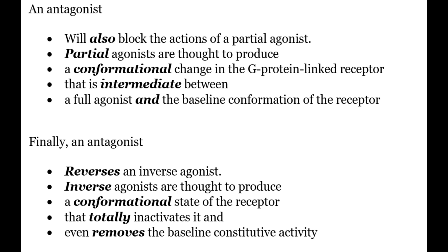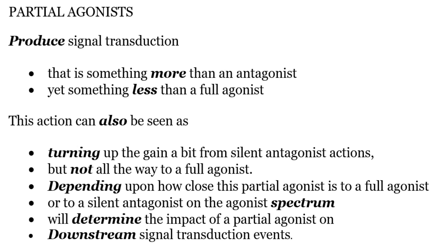An antagonist will also block the action of a partial agonist. Partial agonists are thought to produce a conformational change in the receptor that is intermediate between a full agonist and the baseline conformation of the receptor. Antagonists block the action of everything in the agonist spectrum, and an antagonist will also reverse an inverse agonist. An inverse agonist is thought to produce a conformational state of the receptor that totally inactivates it and even removes the baseline constitutive activity. Partial agonists produce signal transduction that is something more than an antagonist yet something less than a full agonist — like turning up the gain a bit from silent antagonistic actions but not all the way to a full agonist. Depending upon how close the partial agonist is to a full agonist or a silent antagonist on the agonist spectrum will determine its impact on downstream signal transduction.